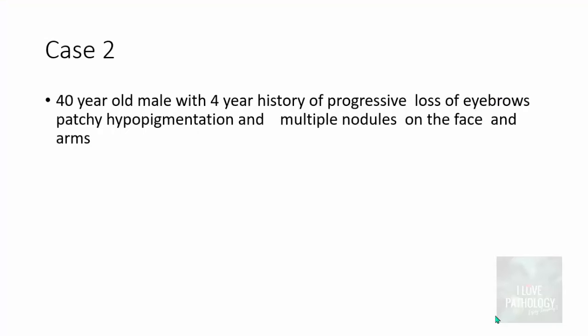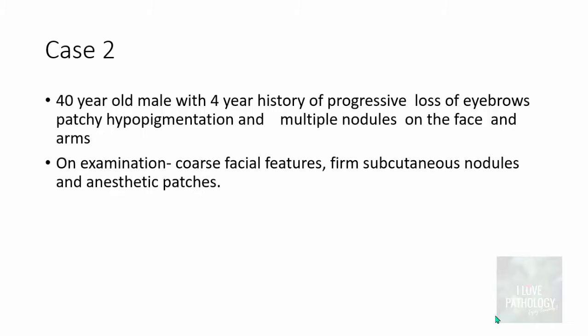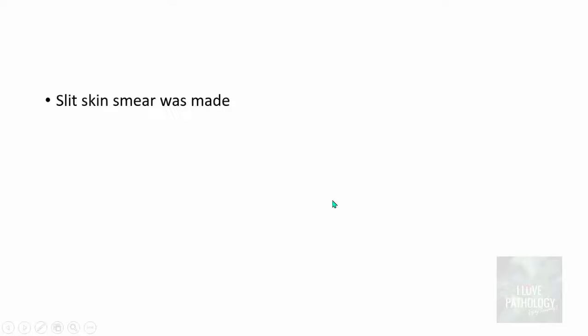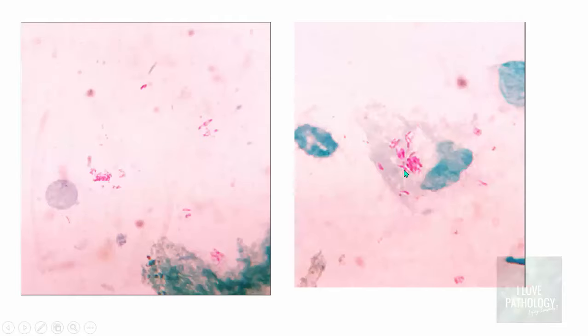Moving to Case 2: a 40-year-old male with a 4-year history of progressive loss of eyebrows, patchy hypopigmentation, and multiple nodules on the face and arms. On examination, facial features were coarse, with multiple subcutaneous nodules and anaesthetic patches. This is again a case of leprosy by definition. Multiple nodules are visible on the face. The slit skin smear was made from ear lobules, forehead, cheek, and elbow, revealing multiple bacilli clumped together — these are called globi.